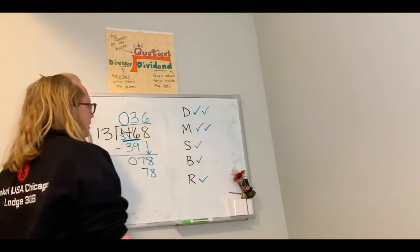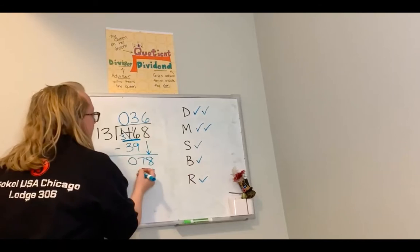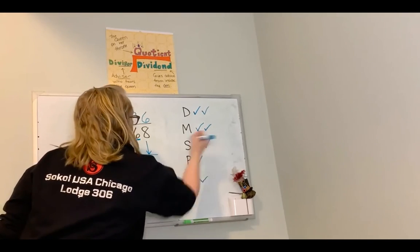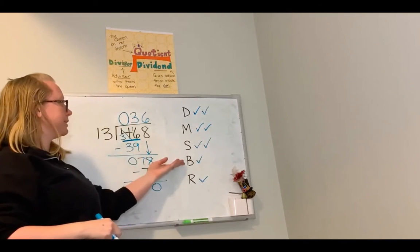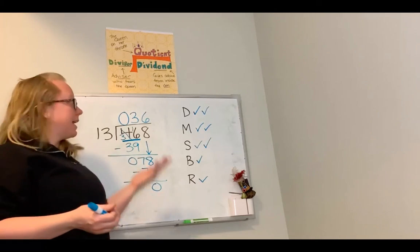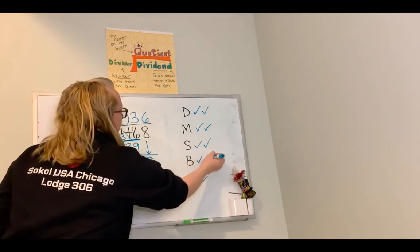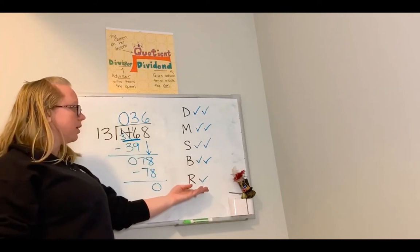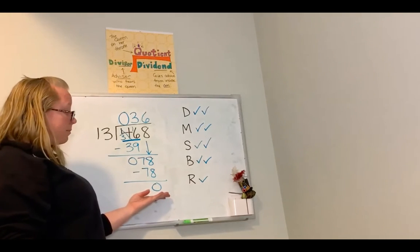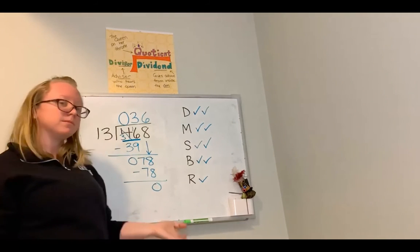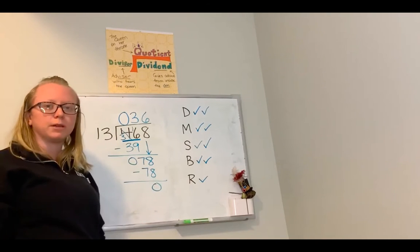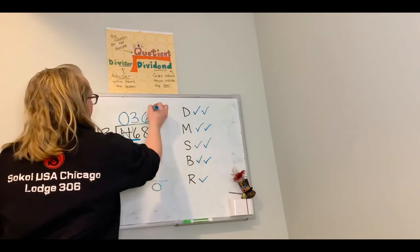I go down to subtraction: 78 minus 78 gives me 0. I check off subtraction. Then bring down: I look at my dividend — are there any numbers left to bring down? No. I check off bring down. Finally, repeat or remainder: is 0 bigger than 13? No, it's 0. My remainder is technically 0, so I don't need to write it. My answer is 36.